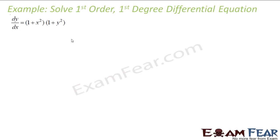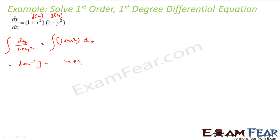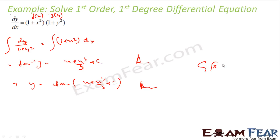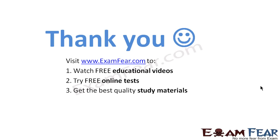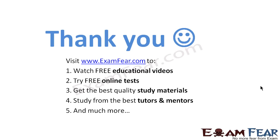Let us take one example: dy/dx = (1 + x²)(1 + y²). This is a very simple question because (1 + x²) is f(x) and (1 + y²) is g(y), already given in this form. So dy/(1 + y²) = (1 + x²) dx. Integrate both sides: tan⁻¹(y) = x + x³/3 + c, or y = tan(x + x³/3 + c). Please note that here also this is the general solution — till now we have found all general solutions. Thank you. Visit examfear.com to watch free educational videos, try free online tests, and get the best quality study materials.